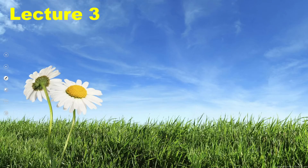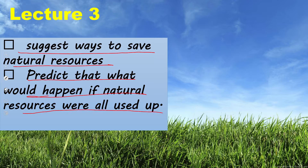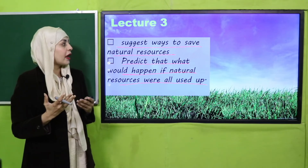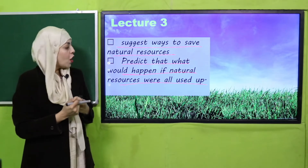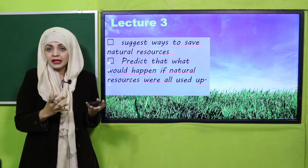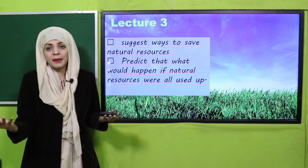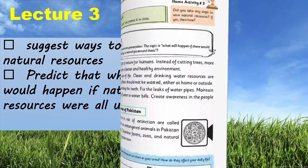Then we will move forward towards lecture number three. By the end of lecture three, all the students will be able to suggest ways to save natural resources and predict what would happen if natural resources were all used up. Since natural resources are limited, students will discuss how we can conserve them. The pages included are page number 30 and page number 31.